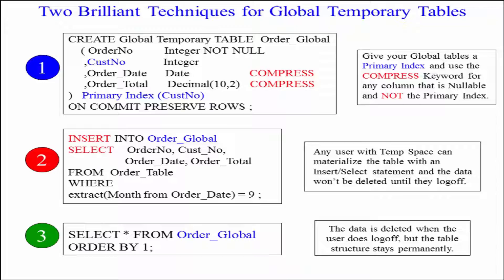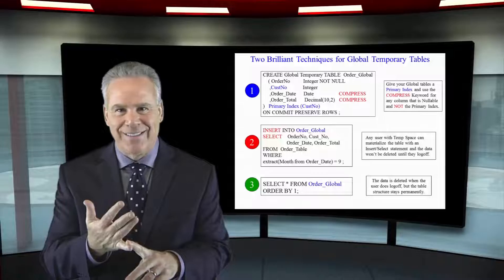Notice also in red here in my create statement I've got the words compress and compress. This is going to compress any null values. You can't compress the primary index.